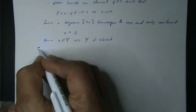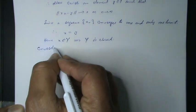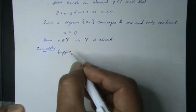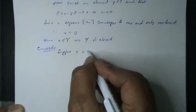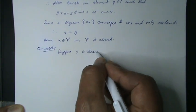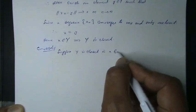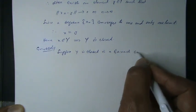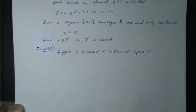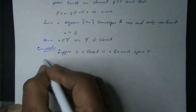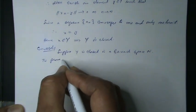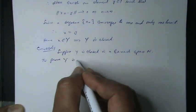Conversely, suppose Y is closed in a Banach space N. To prove subspace Y is complete.